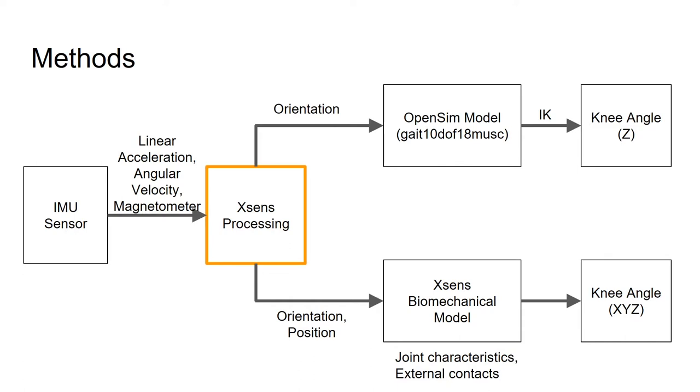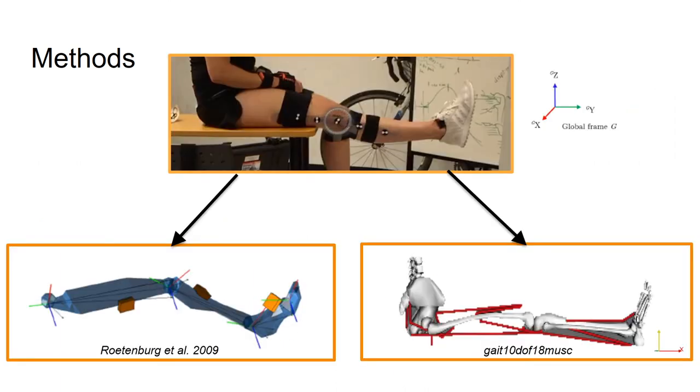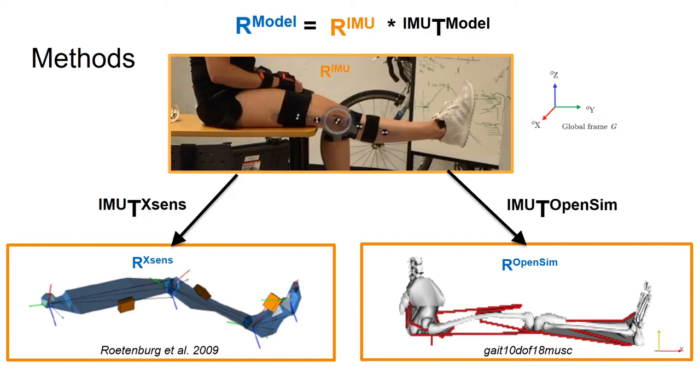We took advantage of the XSens extended Kalman filter and processing step here and got sensor orientations in the form of quaternions, which we then translated to rotation matrices with a simple MATLAB script. One important thing to note about going from IMU sensor orientation in the real world to model space is that you have to have an initial calibration step. This relates the rotation sequence or orientation in the real world to the rotation sequence in the model's world by some transformation T. You can then use this transformation to propagate your model forward based on the IMU data you collect.